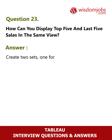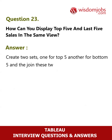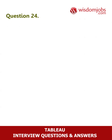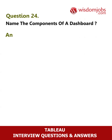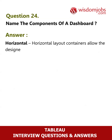Question 23: How can you display the top five and last five sales in the same view? Create two sets — one for the top five and another for the bottom five — then join these two sets, displaying a unique set of 10 total rows.